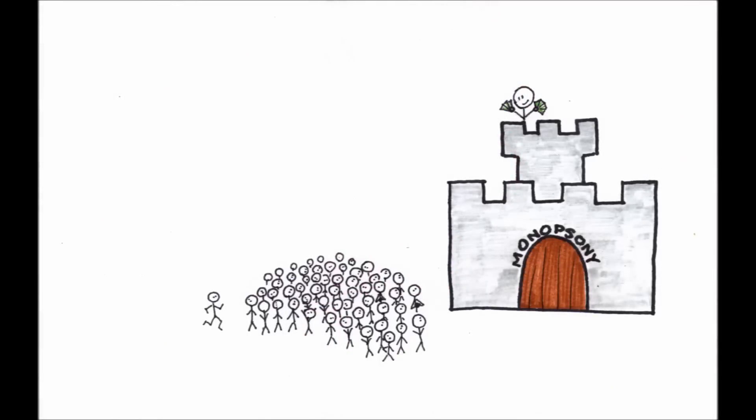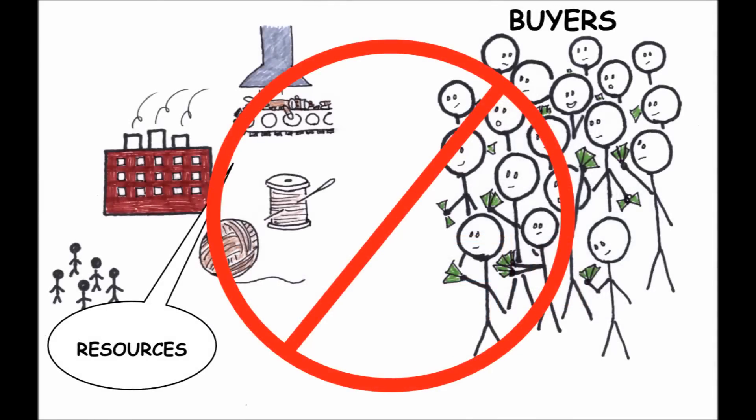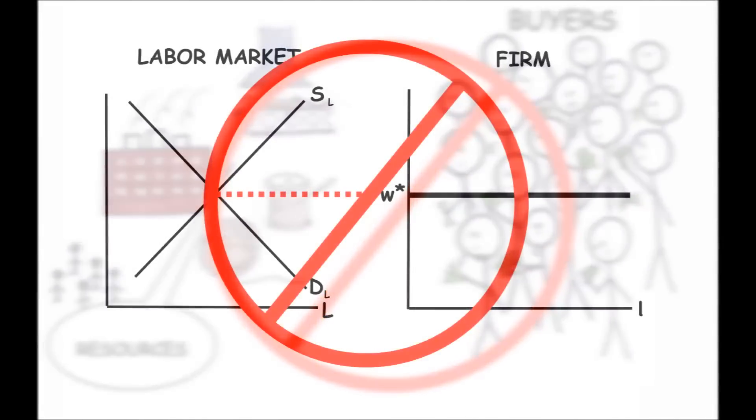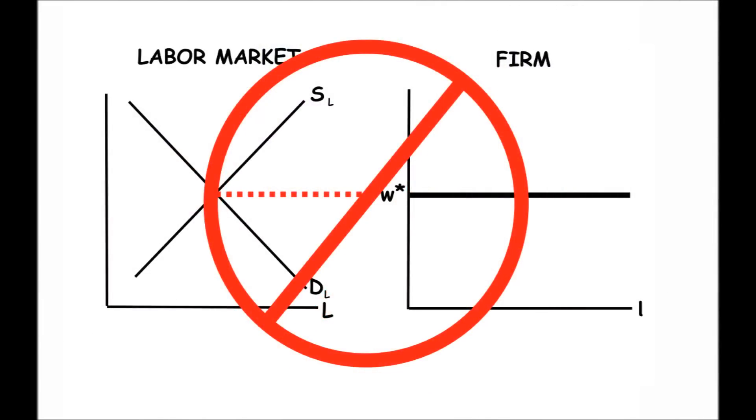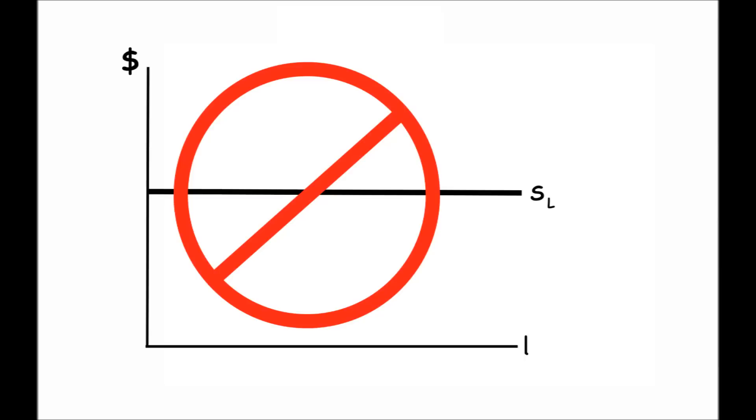If you are the monopsonistic hirer of, for example, labor, then you are the only employer in this market. This could occur if there was just a single employer in a small, isolated town. You are no longer a competitive hirer of labor, subject to the price determined by the overall supply of and demand for labor in the market, i.e., you are no longer a price taker when it comes to the wage that you pay the workers.